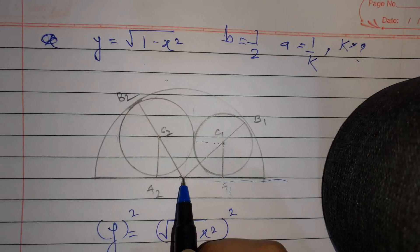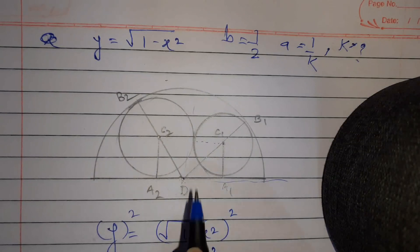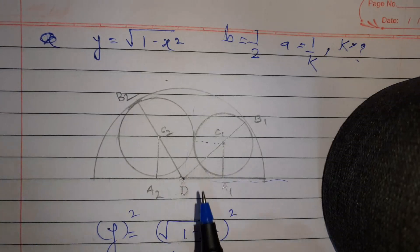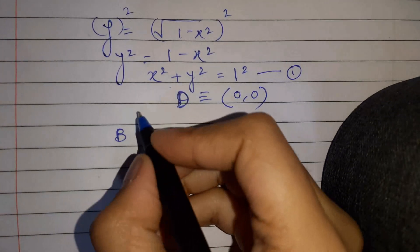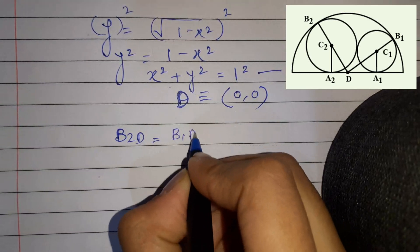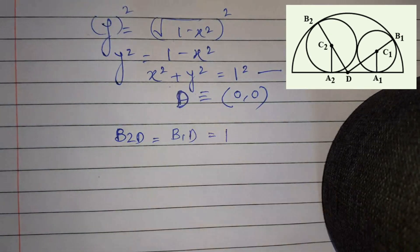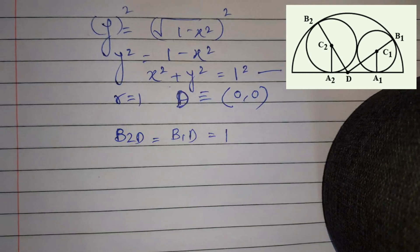Let D be the center of the big semicircle. From the general formula for this circle, the center D is at (0, 0), the origin. The radius of the semicircle is equal to 1, as given by the equation x² + y² = 1.